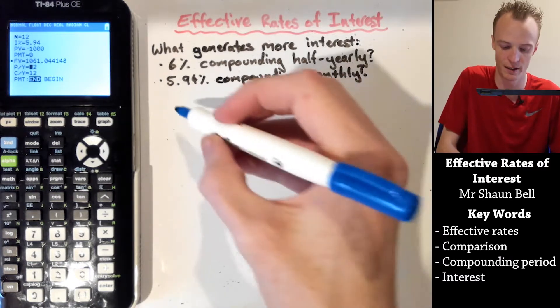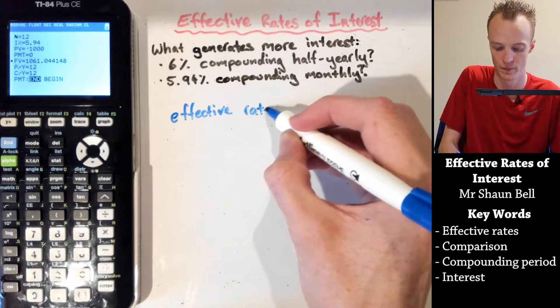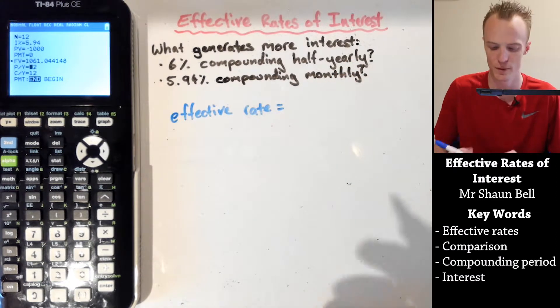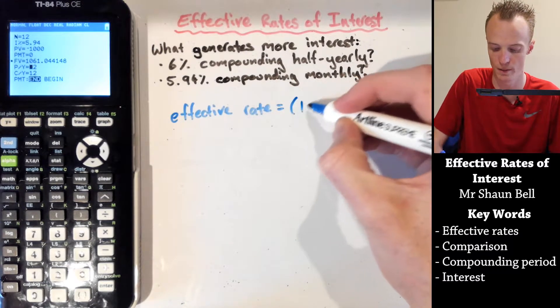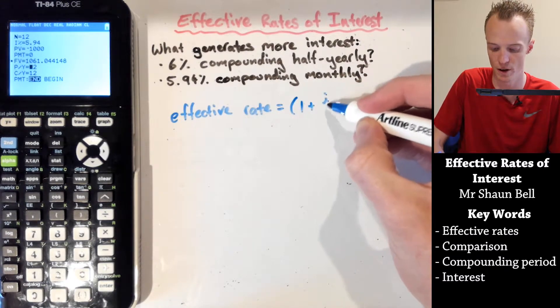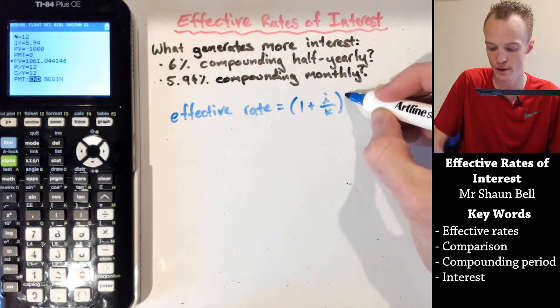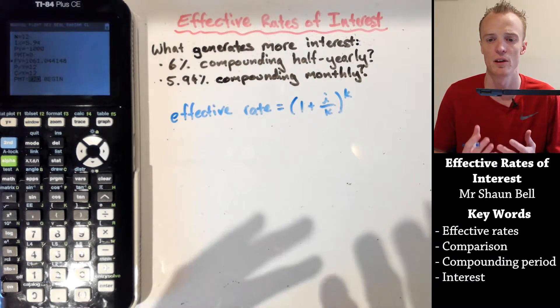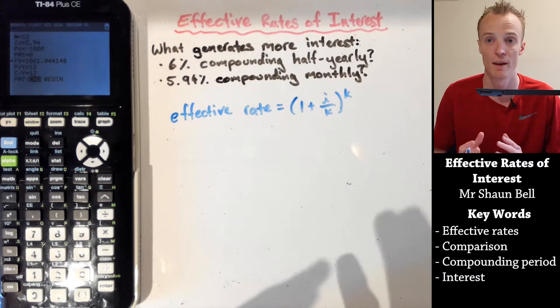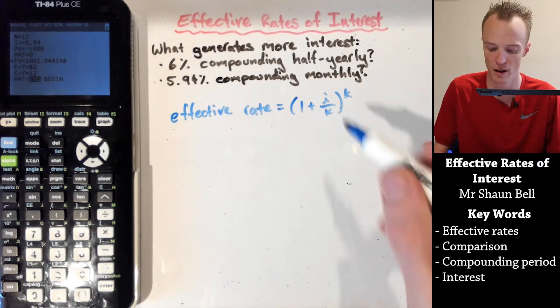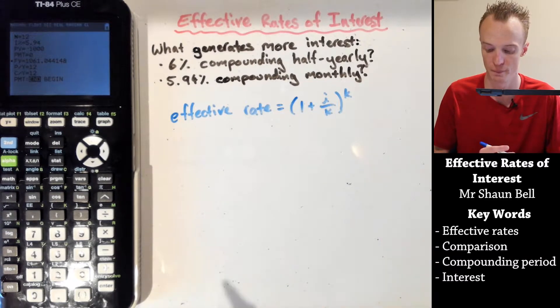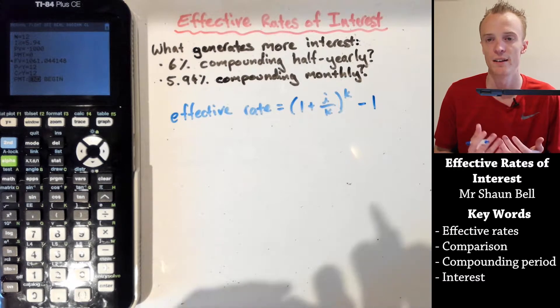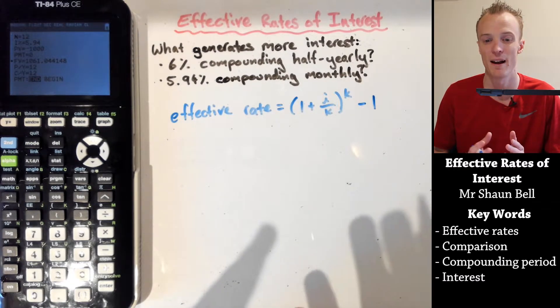Now to calculate the effective rate, we use part of the compound interest formula. It comes from this: 1 plus i over k, but instead of to the power of kn, we're just looking to the power of k, where k is the number of times that interest compounds per year, and i is our interest rate per annum. But we then subtract 1 off to get ourselves the actual comparative rate.